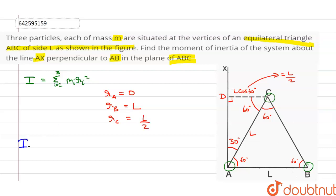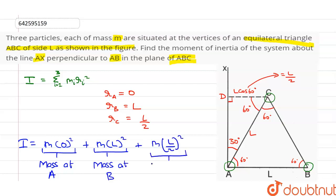Putting these values in, I is equal to m into 0 square. This is for mass at A. Plus m into L square for mass at B, plus m into L upon 2 square. This is for mass at C.